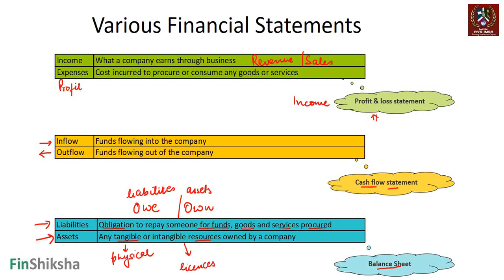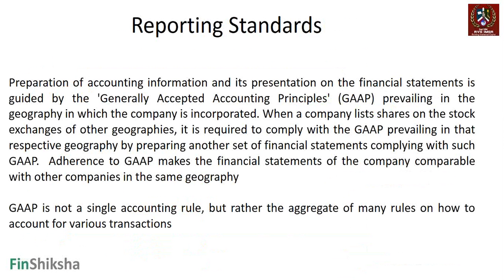All three financial statements give us a different kind of picture of what is happening in the business. You cannot comment on the financial health of a company by looking at only one of these statements. To get to the crux of a company's financial health, you have to look at all three of them together.